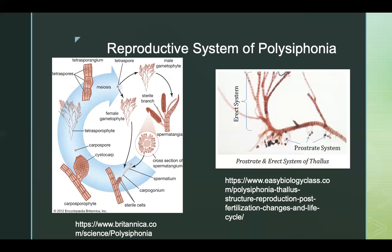A carpogonial filament is produced through transverse divisions along the carpogonial initial. One cell on this filament is sent into the carpogonium and attaches a singular cell into its basal portion. A short sterile filament is formed by supporting cells, and a single-layered covering is produced around the carpogonium by means of division of the pericentral cells.